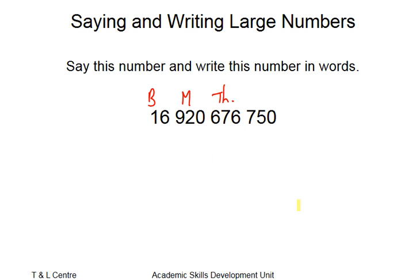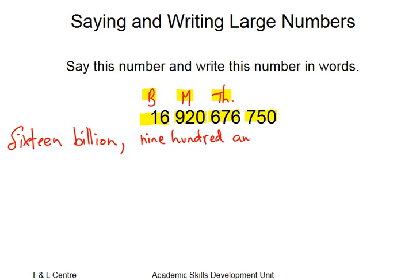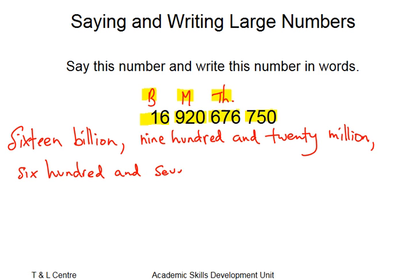So this number will be 16 billion, 920 million, 676 thousand, 750. So putting that into words: sixteen billion, nine hundred and twenty million, six hundred and seventy-six thousand, seven hundred and fifty.